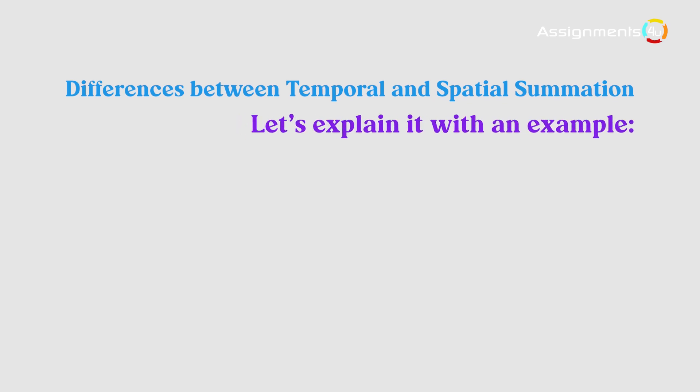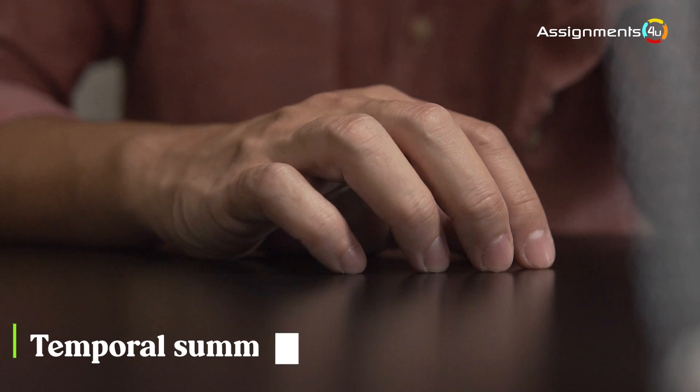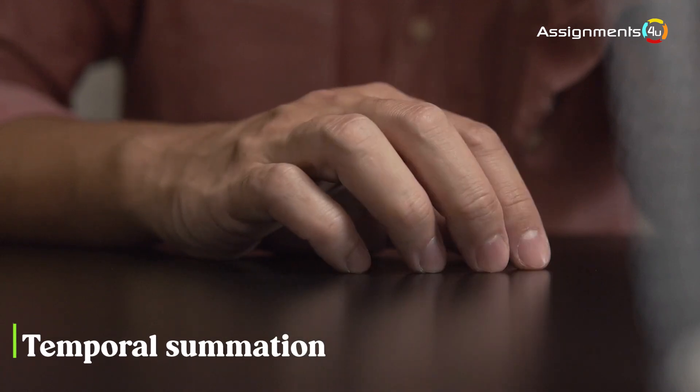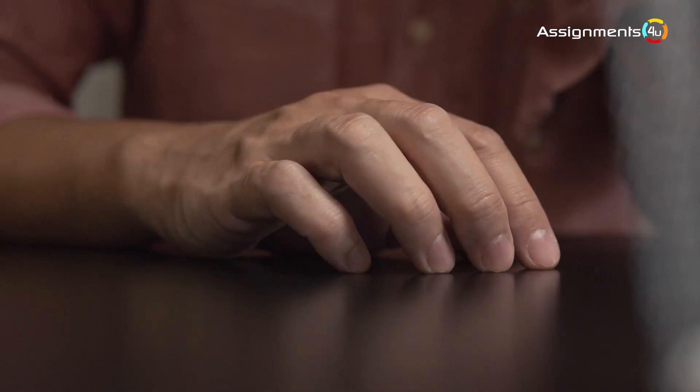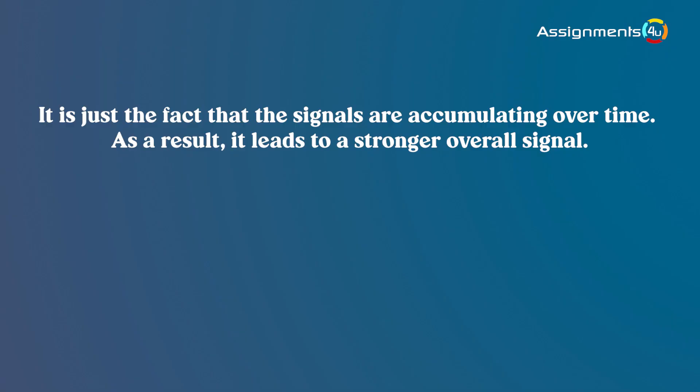Differences between temporal and spatial summation: Let's explain it with an example. Example on temporal summation: Try tapping your finger lightly on your desk. In the beginning, you might not feel anything, but if you tap your finger repeatedly, you'll eventually start to feel a sensation. It is just the fact that the signals are accumulating over time. As a result, it leads to a stronger overall signal.